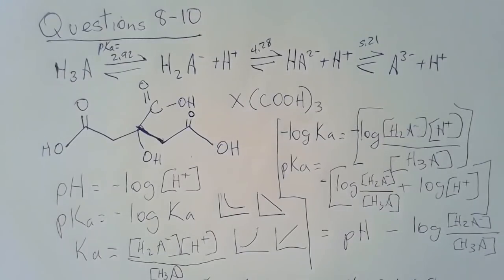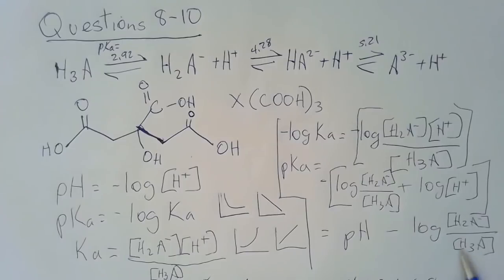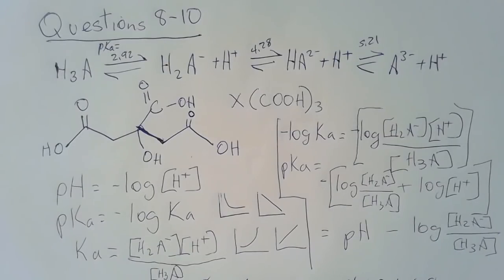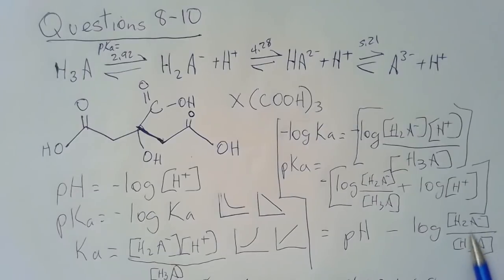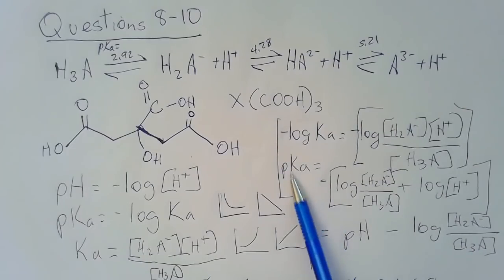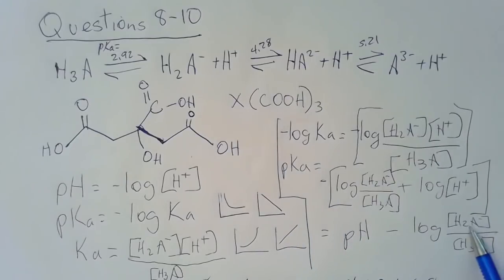So pKa equals pH minus log([H₂A⁻]/[H₃A]), where H₂A⁻ is the conjugate base and H₃A is the conjugate acid. This confirms: if the conjugate base equals the conjugate acid, the ratio is one, log of one is zero, and the whole term disappears — so pKa equals pH. That proves question 9.